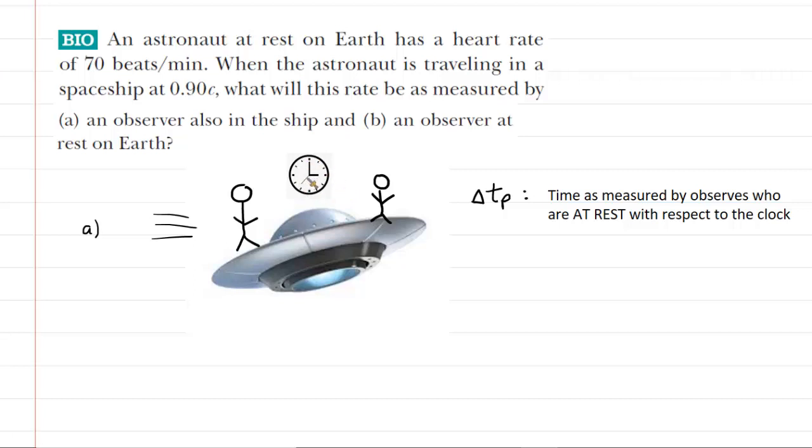This can be a little confusing because the spacecraft itself is definitely moving. However, the clock and the observer and the clock and the astronaut are at rest relative to one another. One way to understand that is to ask yourself, is the distance between the observer and the clock or the distance between the astronaut and the clock changing?